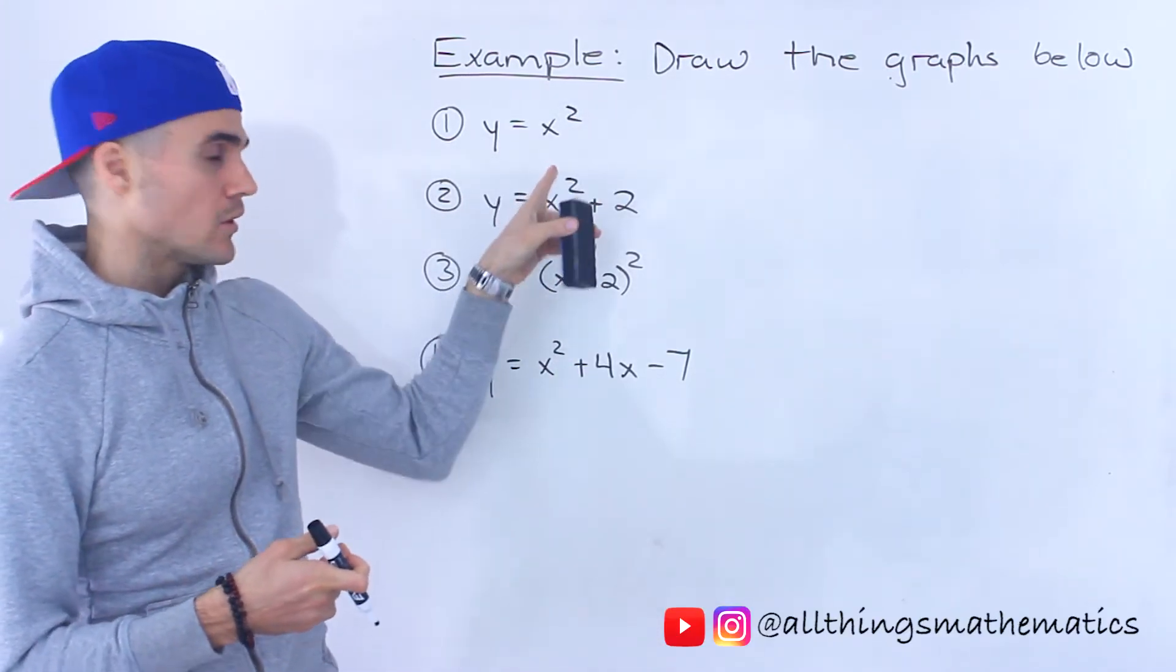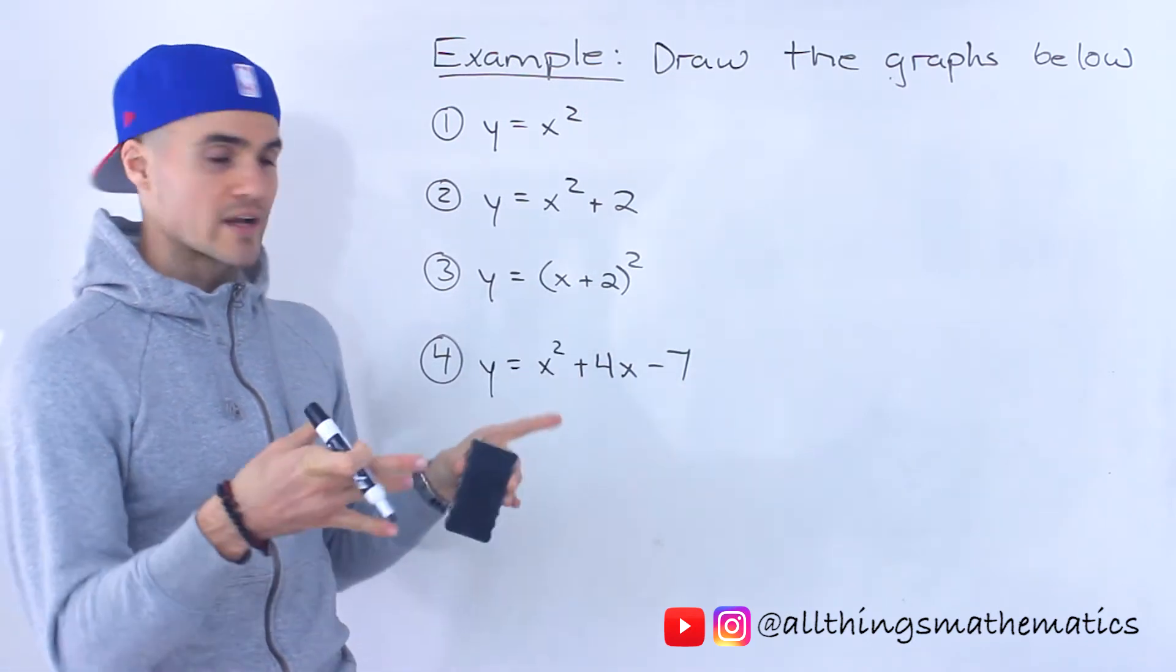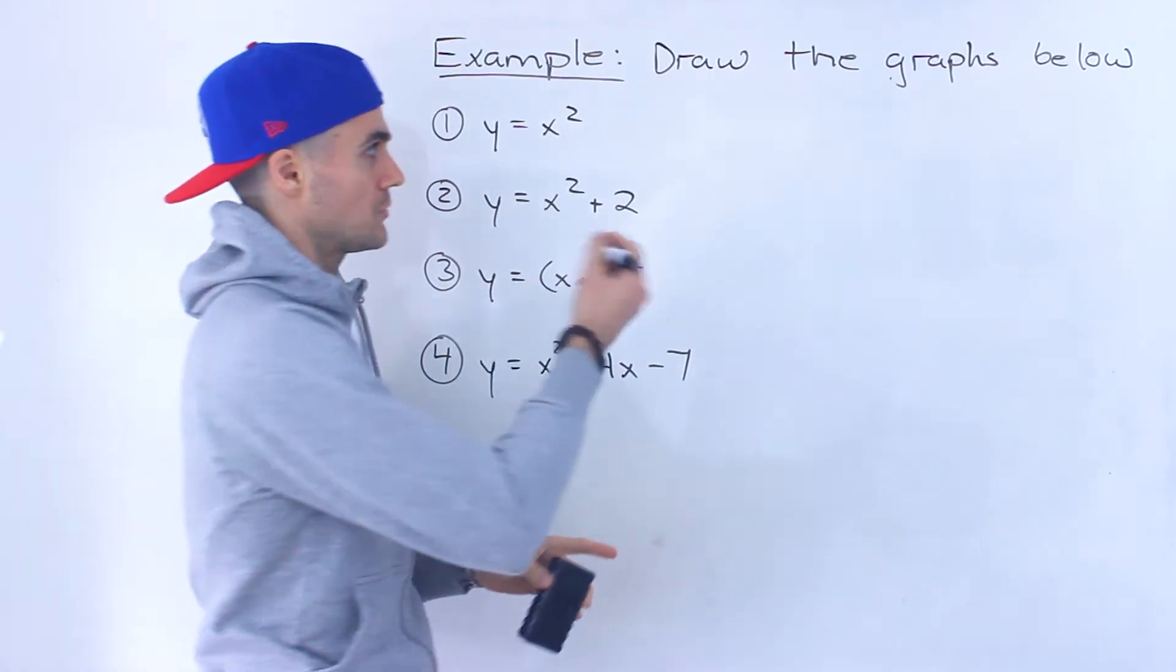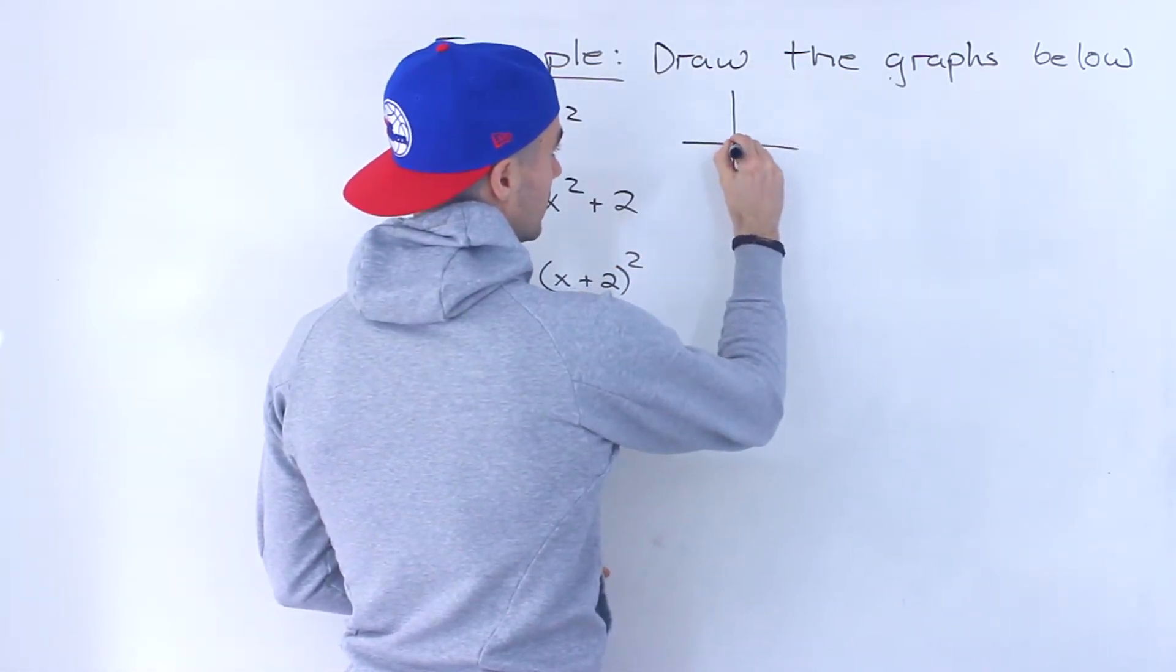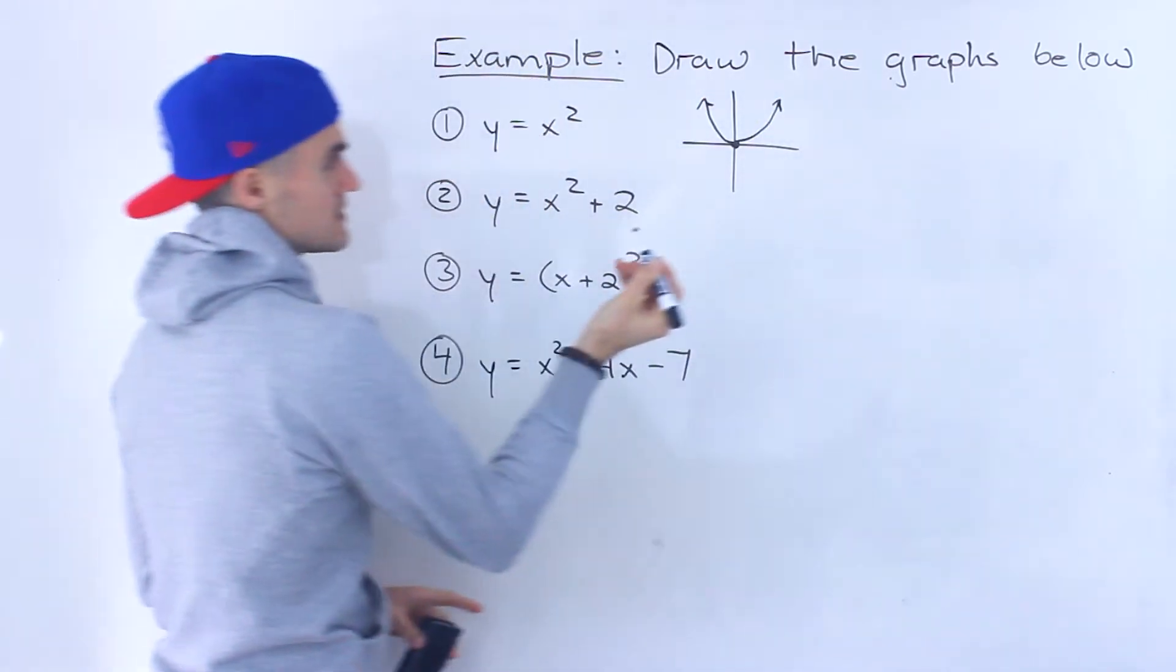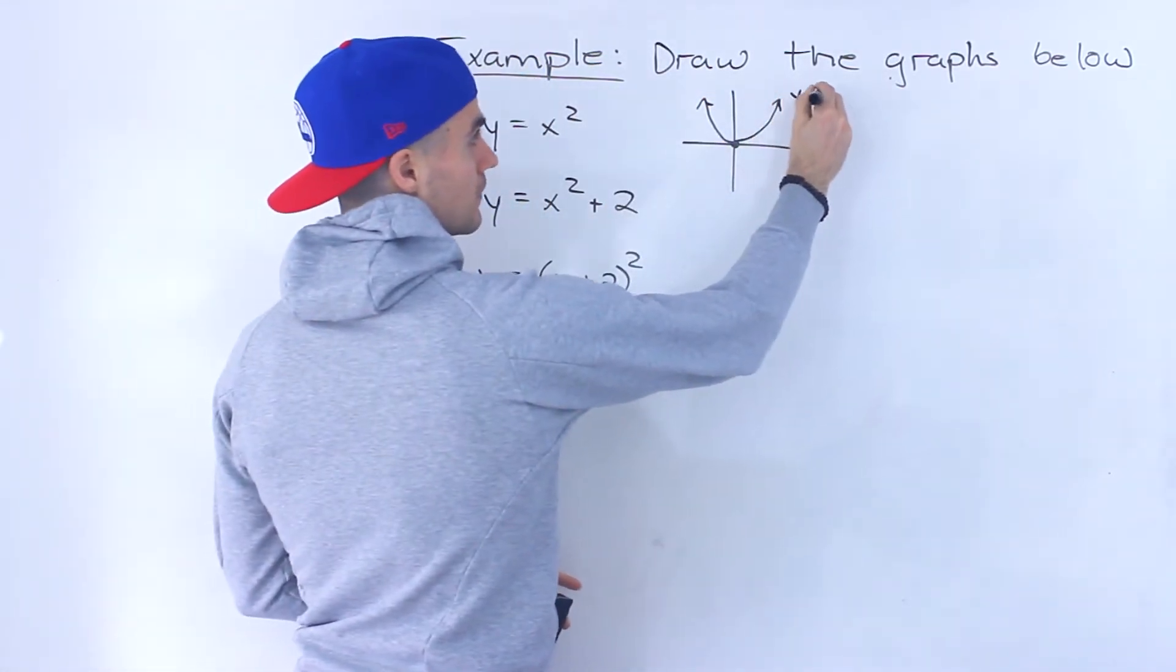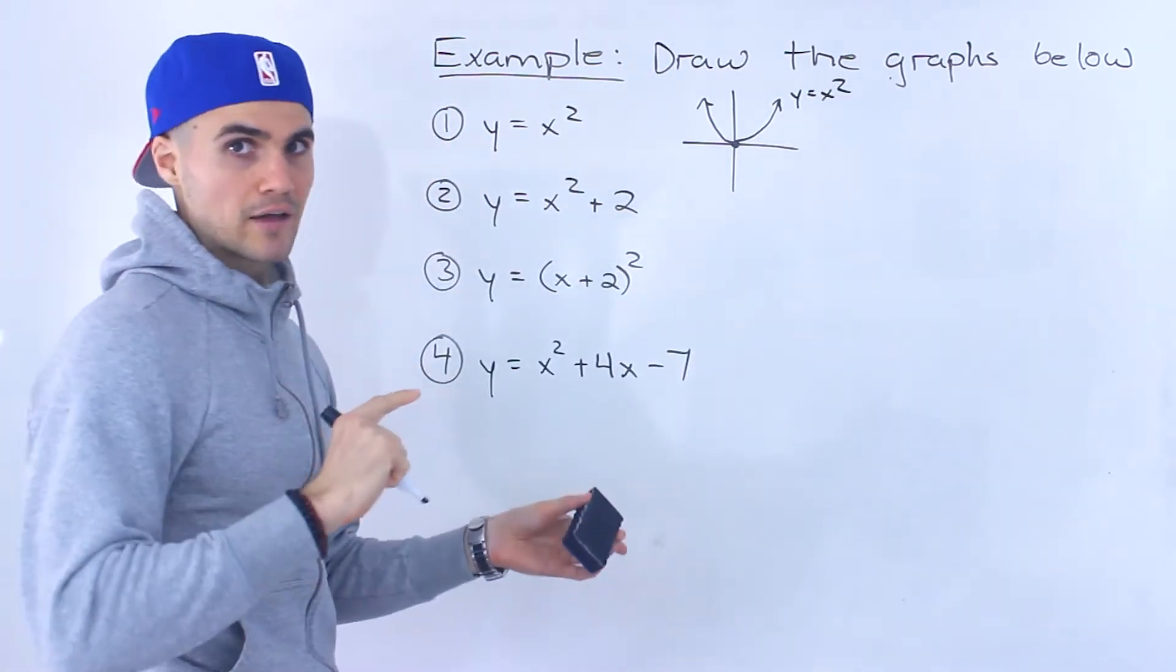So we're starting with the basic parabola, y equals x squared, that parent function, and then we're going to transform it in different ways. Starting with y equals x squared, we know that's just a basic parabola that has a vertex at zero and zero. So it looks something like that. You can make a table of values as well.